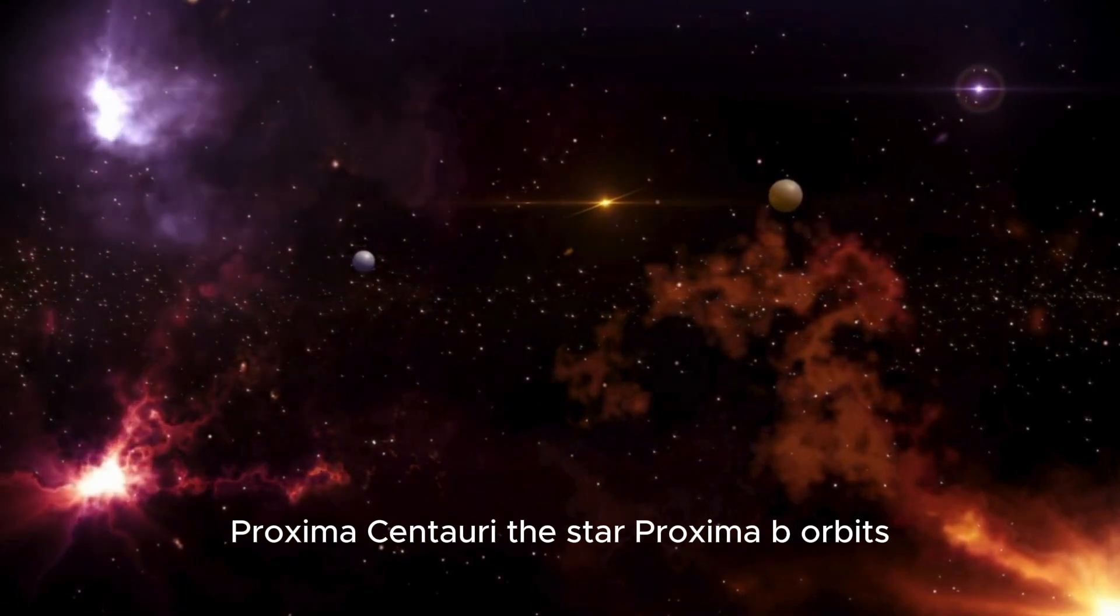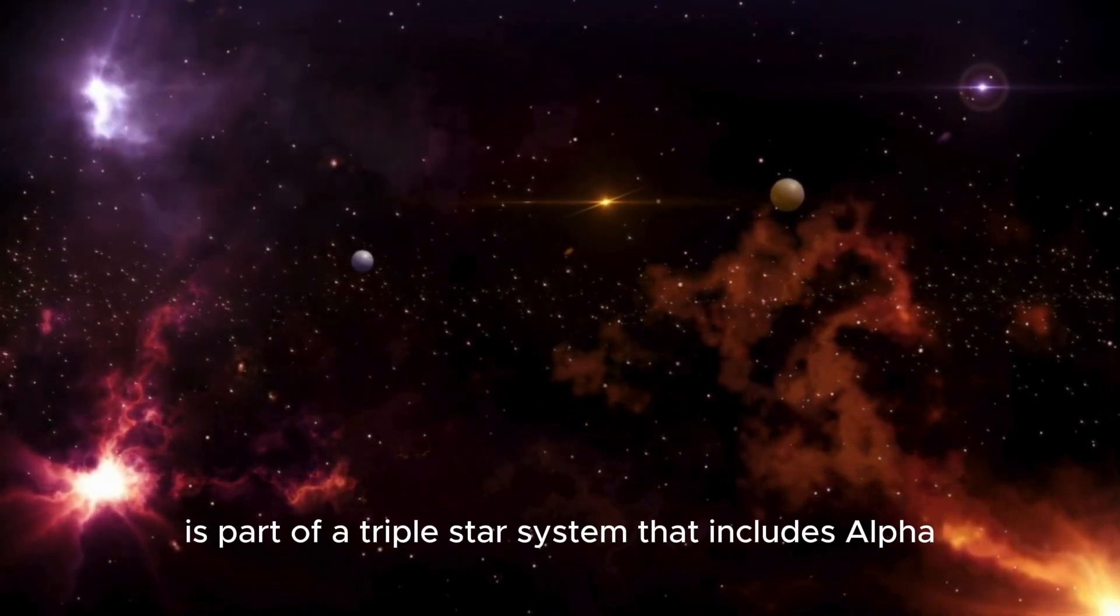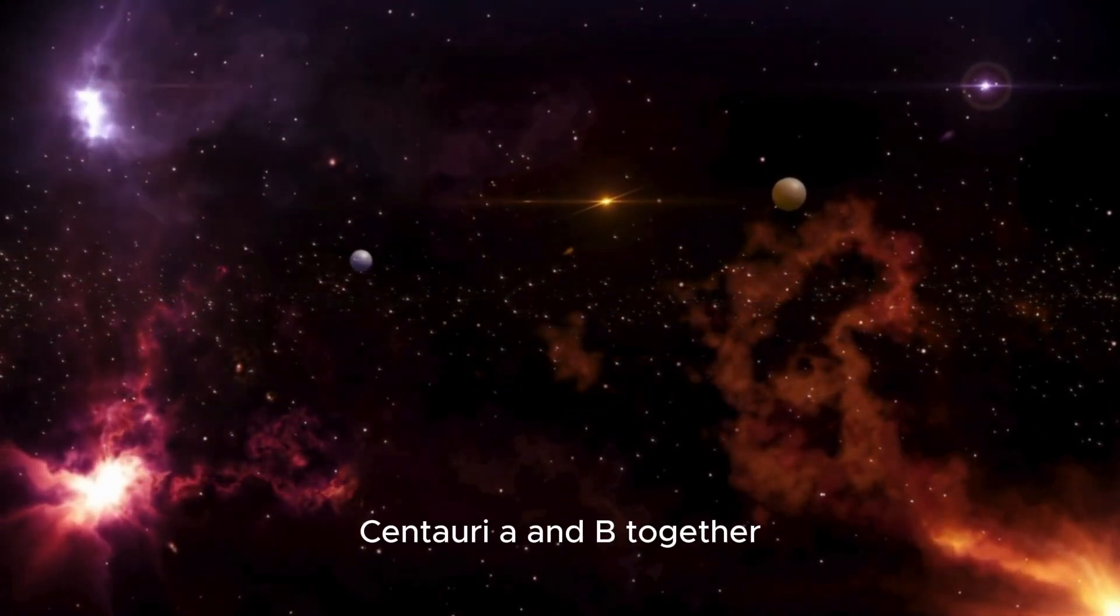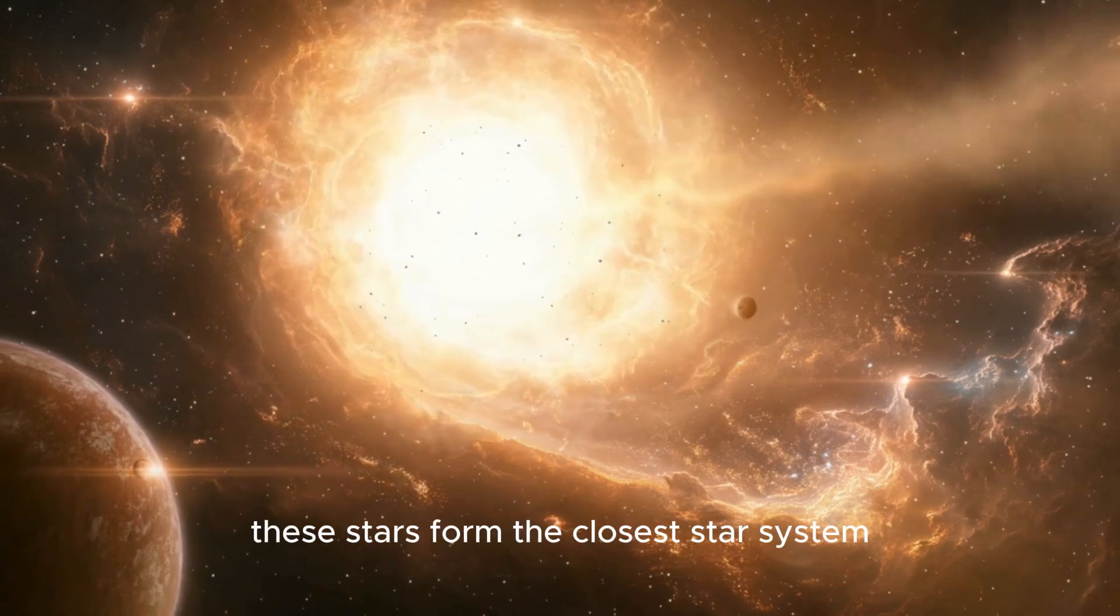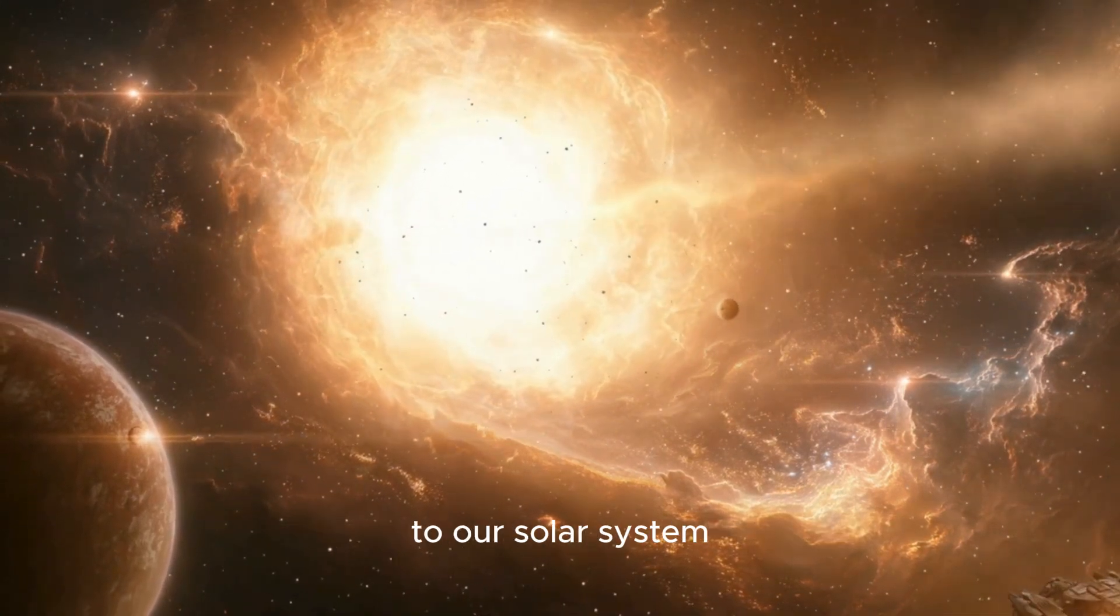Proxima Centauri, the star Proxima b orbits, is part of a triple star system that includes Alpha Centauri A and B. Together, these stars form the closest star system to our solar system.